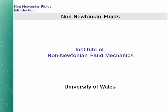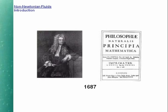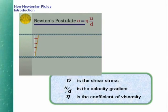To understand non-Newtonian fluids, it is clearly necessary to begin with a definition of what is commonly referred to as a Newtonian viscous fluid. To do this, we have to return to 1687 and the publication in the Principia of Newton's famous postulate. For the simple shear flow considered, the force per unit area required to produce the motion is proportional to the velocity gradient, and the constant of proportionality is the coefficient of viscosity, usually described by the Greek eta.